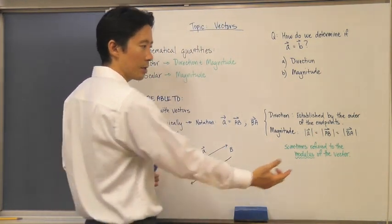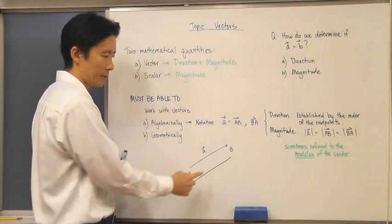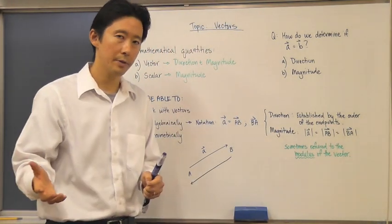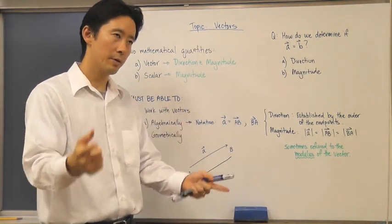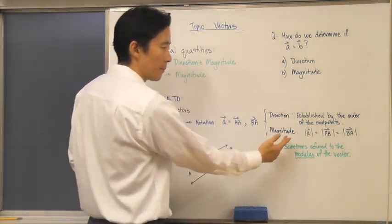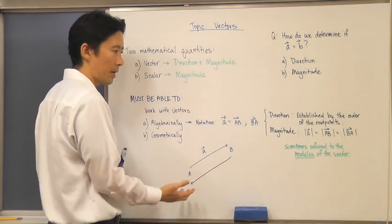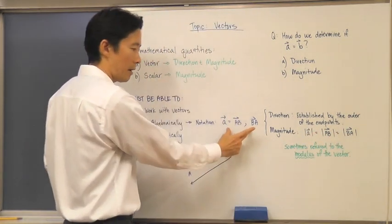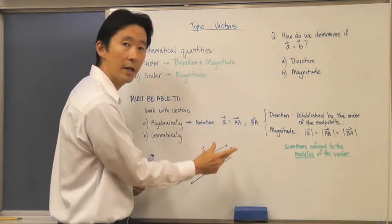The magnitude of vector a is equal to the modulus of vector AB, and it is also equal to the modulus of vector BA even though the direction was different. So the lengths are the same but the directions are different in that case.